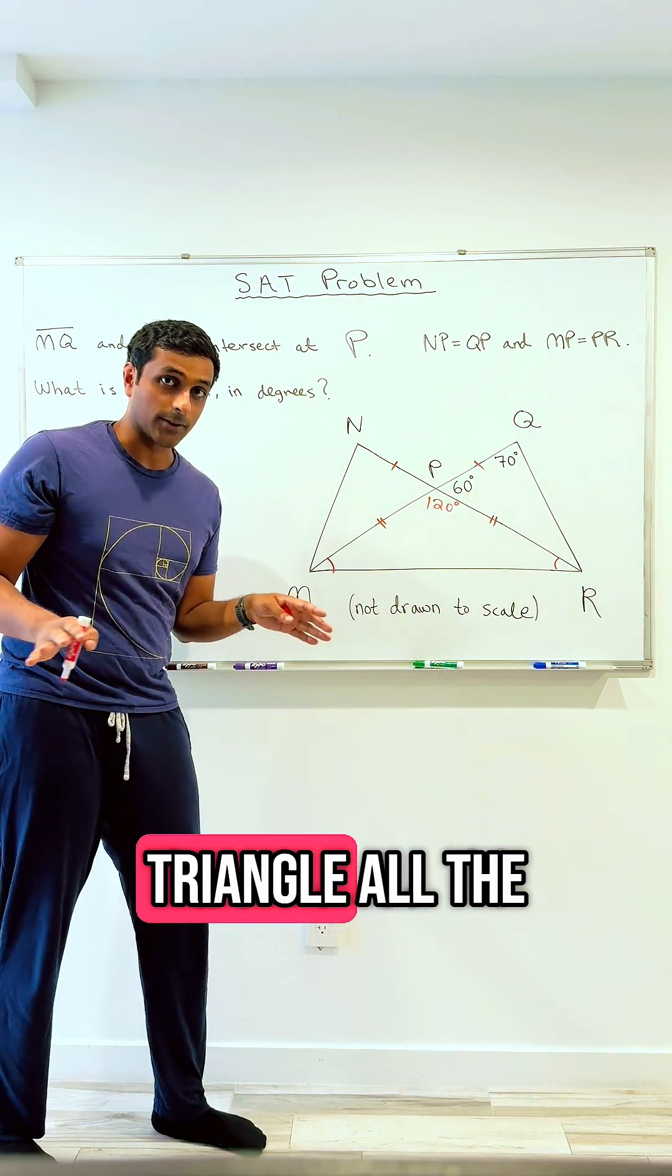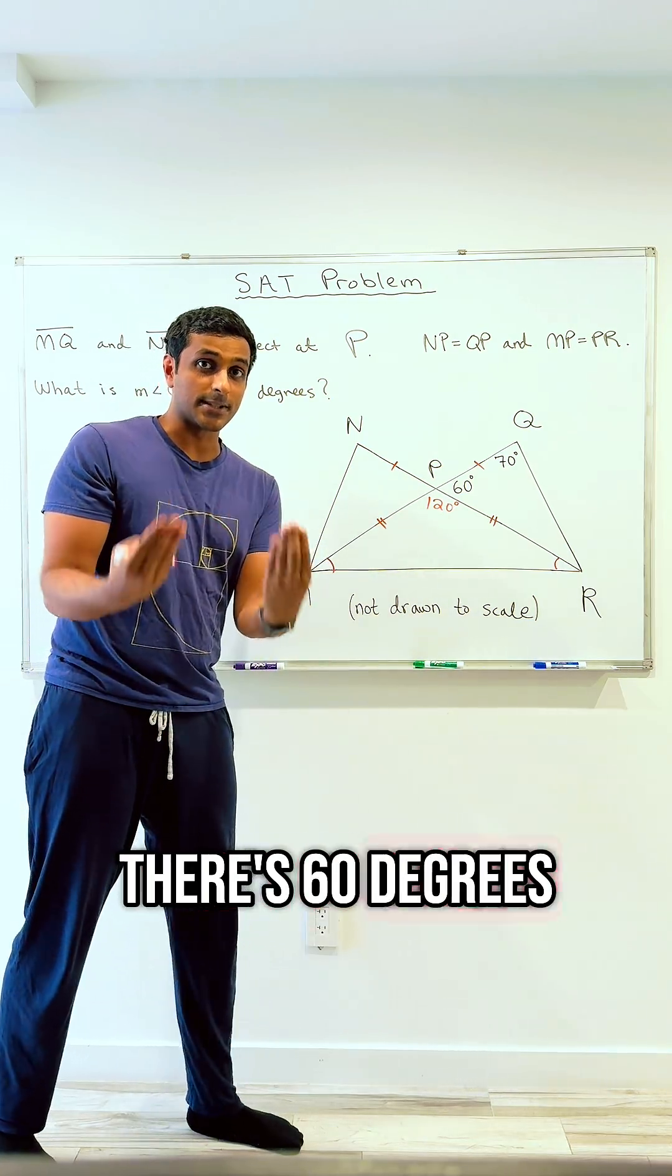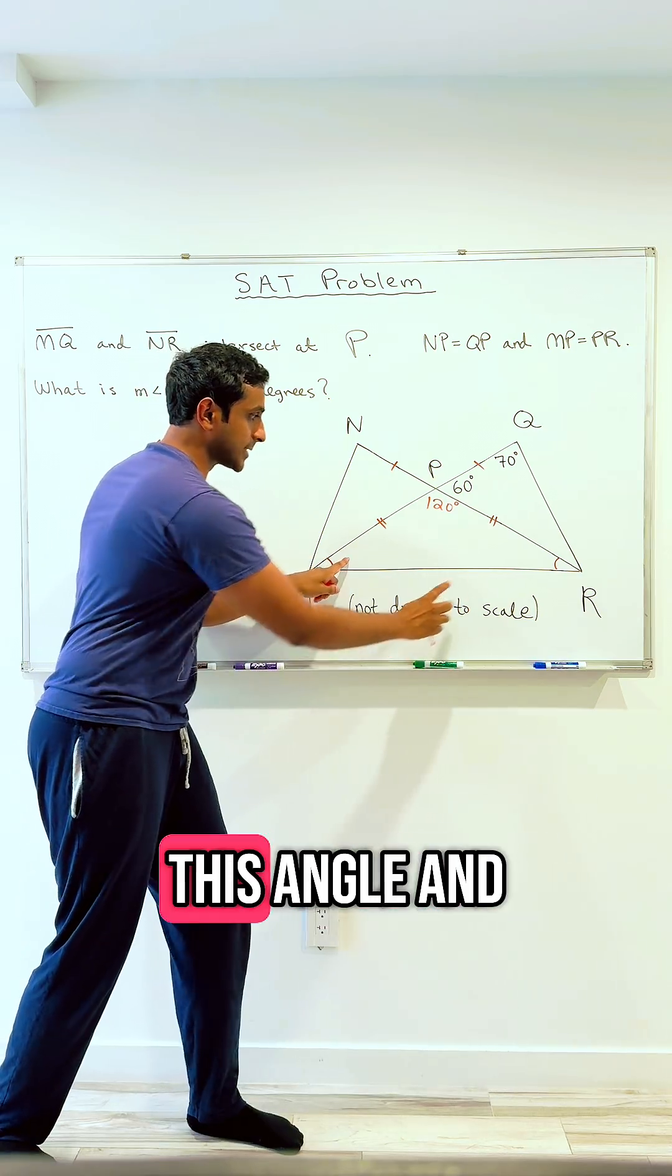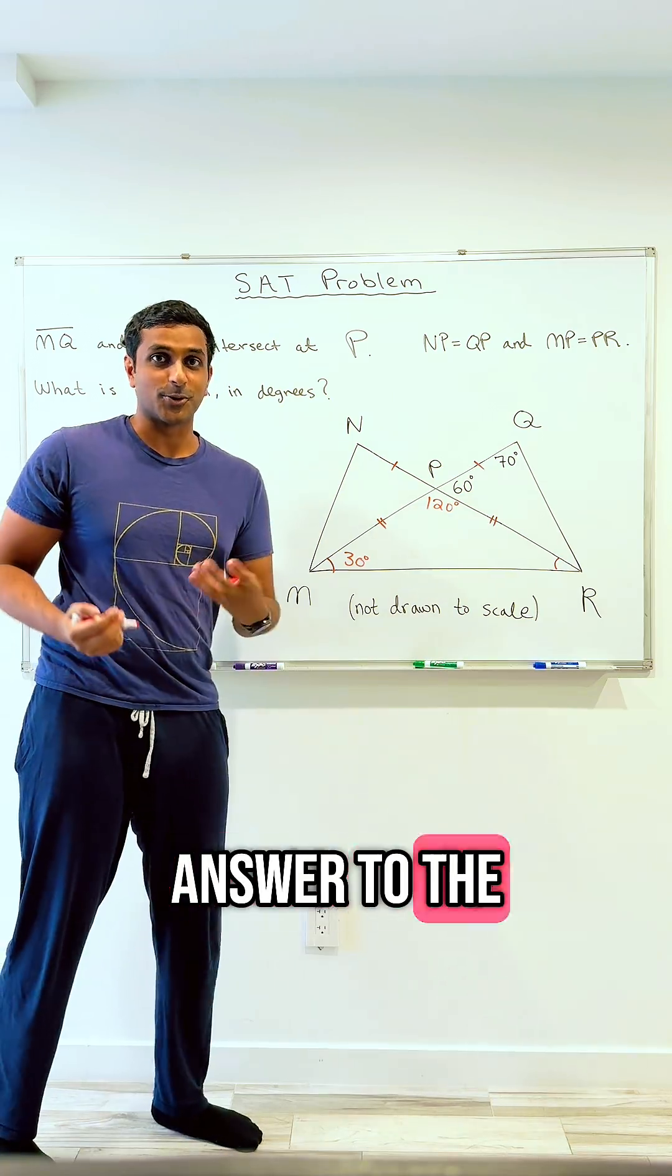And in any triangle, all the angles add up to 180. So if that's 120 degrees, there's 60 degrees left over to split equally between this angle and this angle, which makes this 30 degrees, which is the answer to the question, 30.